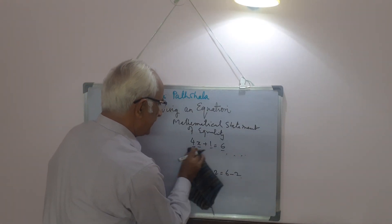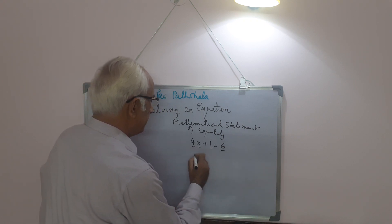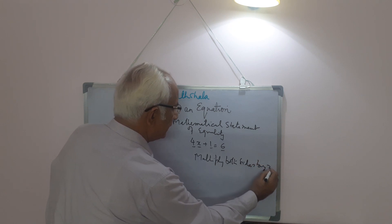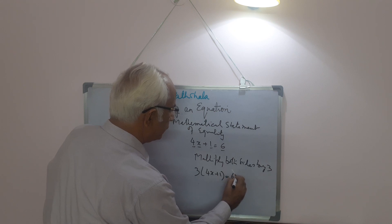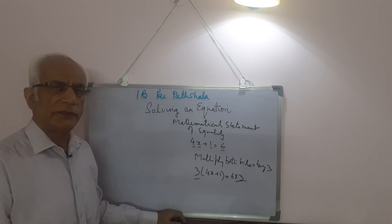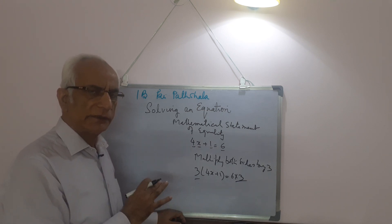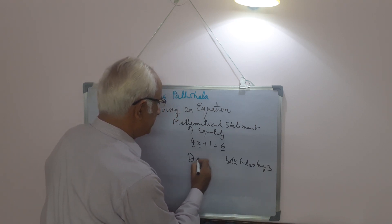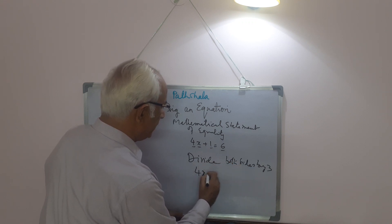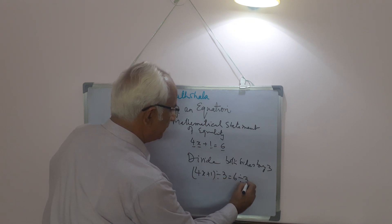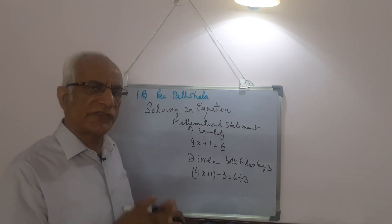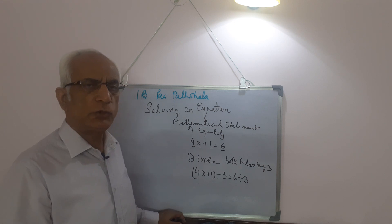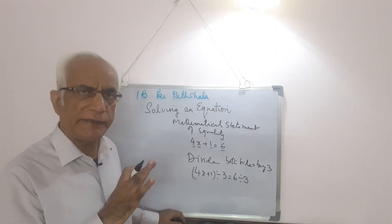Or if I multiply both sides by the same number — say, multiply both sides by 3 — it becomes 3 into (4x plus 1) equals 6 into 3. The balance is maintained. Similarly, if I divide both sides by 3, the equality is still maintained. So you can add, subtract, multiply, or divide both sides by the same number and the balance will not be disturbed.